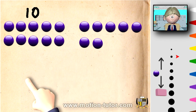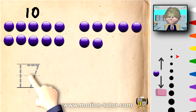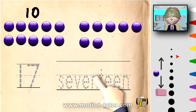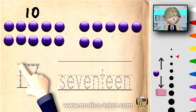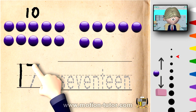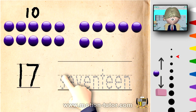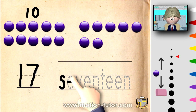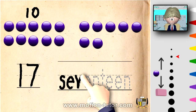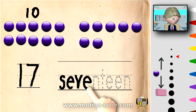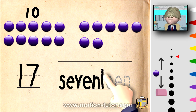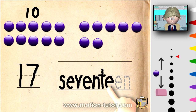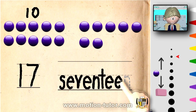Let's look at 17 — it looks like this. And 17 is spelled like that. So let's write 17. It's a 1 and a 7, and it's spelled S-E-V-E-N-T-E-E-N.